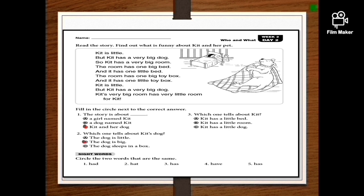Number three: Which one tells about Kit? Kit has a little bed, Kit has a little room, Kit has a little dog. So Kit has a little bed. Why? Because she is a little girl, right?